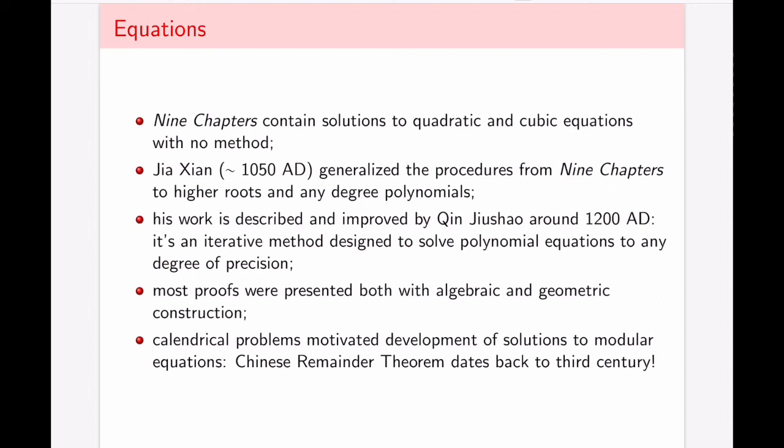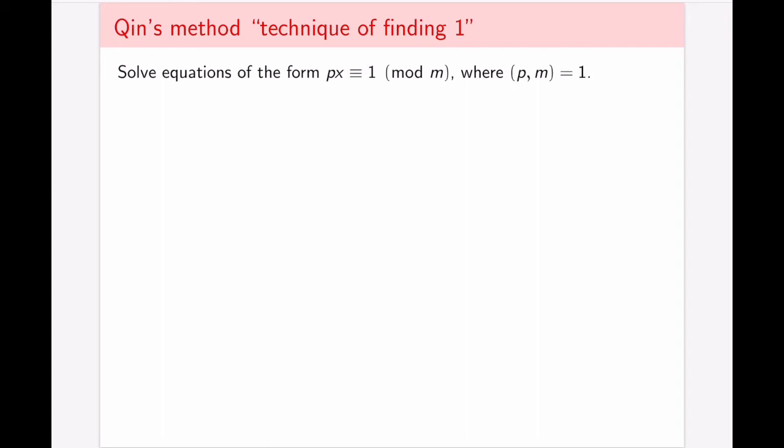And once again, the Chinese remainder theorem that dates back to third century was motivated by the development of calendar and therefore resulted in the development of modular arithmetic and modular equations. Let's take a look at one of the methods to solve a type of modular equation that is presented in one of these sources. Let's take a look here at Qin's method of technique of finding one, which is to solve equation of the form px equals one mod m, where p and m are relatively prime.